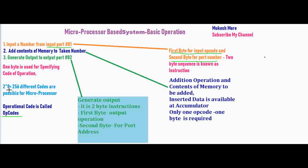We have used the word opcode — opcode is operational code. We have a one-byte instruction, meaning an 8-bit instruction, and we use the operational code for it. Since 2 to the power of 8 equals 256, there are 256 different opcodes possible for a microprocessor. This is just a short piece of information.